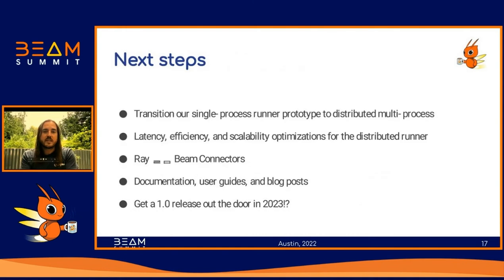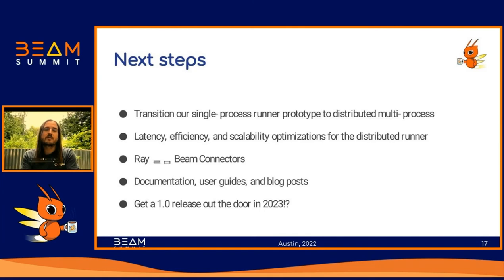Once we're done with current work items, here's what we plan to do over the next year. On the path to a Ray Beam Runner 1.0 release, we minimally need to transition our single-process prototype to a distributed multi-process prototype, then start working on improvements to latency, efficiency, and scalability across various workloads. We also need to develop a minimum viable set of connectors between Ray and Beam to import or export Ray Datasets into and out of Beam pipelines, and ensure there are enough instructional docs to make it easy to start unifying existing batch, streaming, and ML pipelines with our runner.